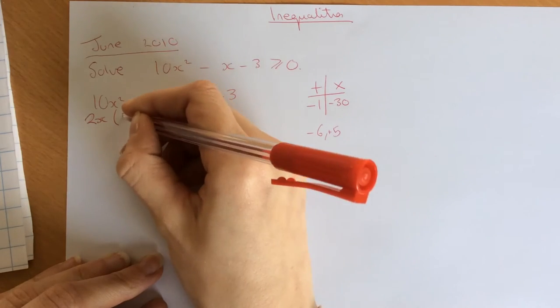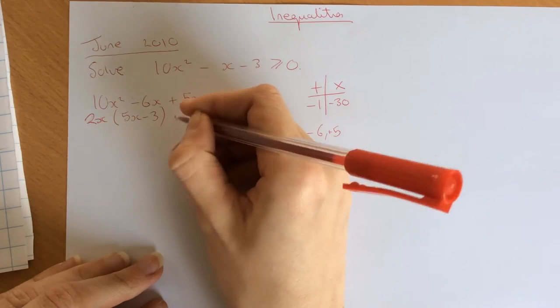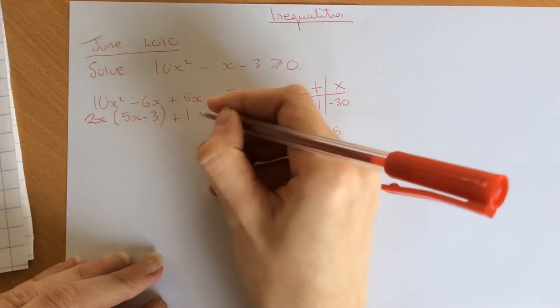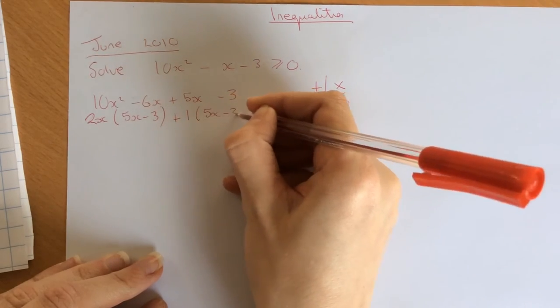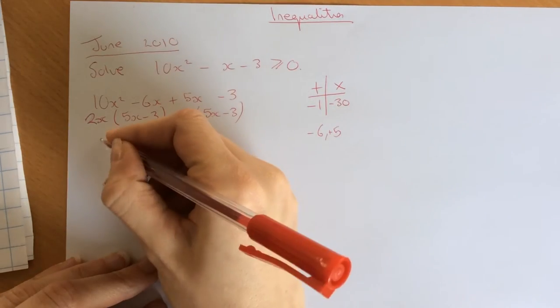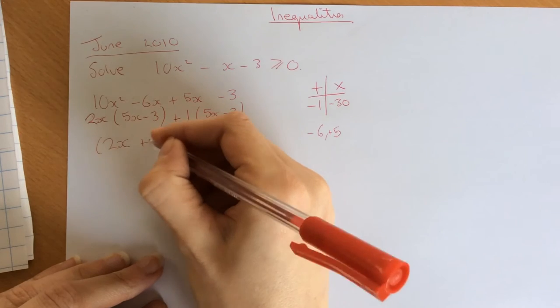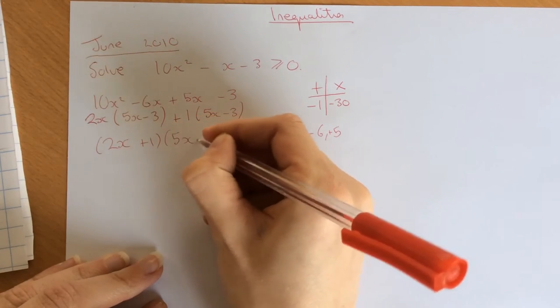Opening the brackets, we're going to get 5x minus 3, plus take out the 1, don't forget the 1, 5x minus 3. Both brackets match. So our final answer is 2x plus 1 and 5x minus 3.